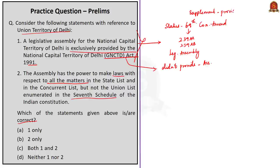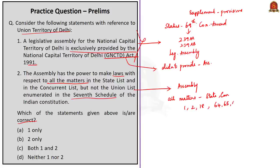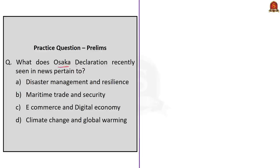Statement 2 is also incorrect because the assembly has the power to make laws on all matters in the State List or Concurrent List, except entries 1 (public order), 2 (police), and 18 (land), and also entries 64, 65, and 66 relatable to those said entries of the State List. Therefore, the right option is D — neither one nor two, since both statements are incorrect. The next question asks what the Osaka Declaration pertains to; the correct answer is option C — e-commerce and digital economy, as it is a G20 dialogue on the digital economy pursued under the WTO framework.